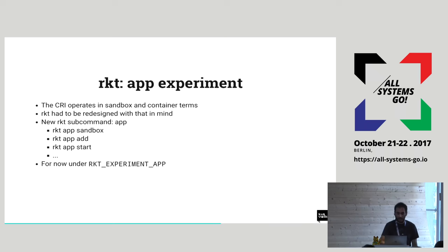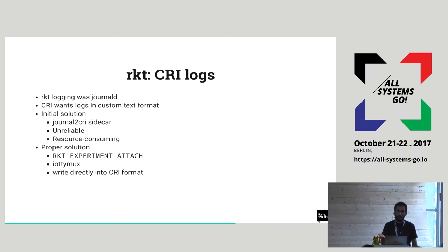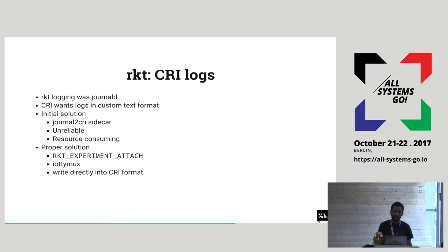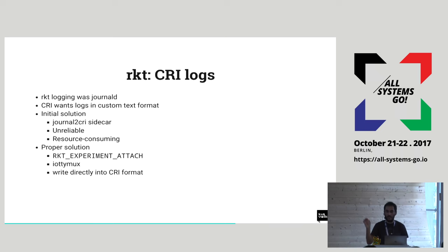Another thing we had to deal with is logs. Since we run systemd inside the pod, the natural way to handle logs is to use the journal — and that's what we were doing. The problem is the CRI interface wants logs in a custom text format, not the journal format. The initial solution was to have another container on each pod that translates journal logs to the CRI format. That had problems: it was resource-consuming — you don't want a sidecar container — and it was unreliable, sometimes producing weird error messages.